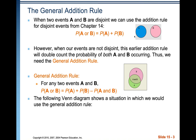Last time we talked about the addition rule for disjoint events. With disjoint events, the probability of A or B is the probability of A plus the probability of B.